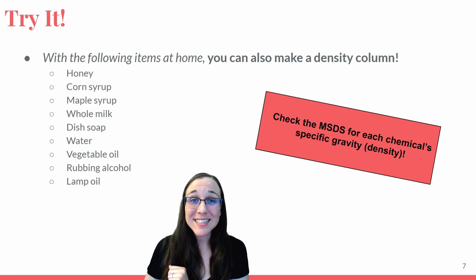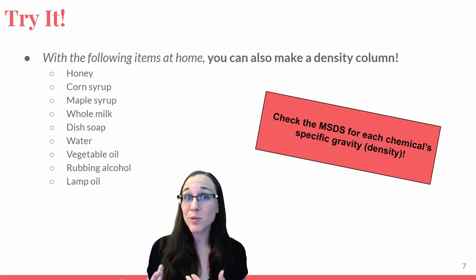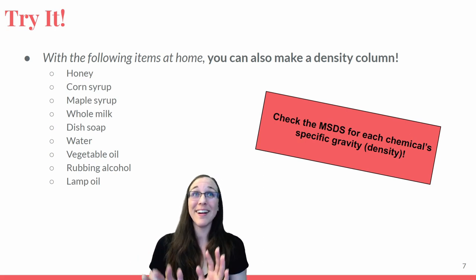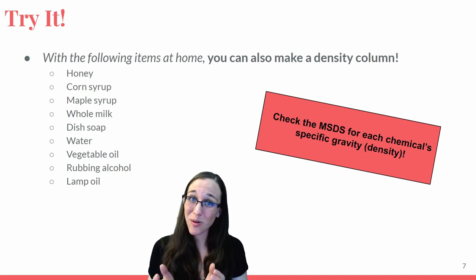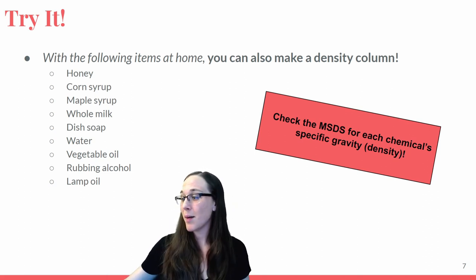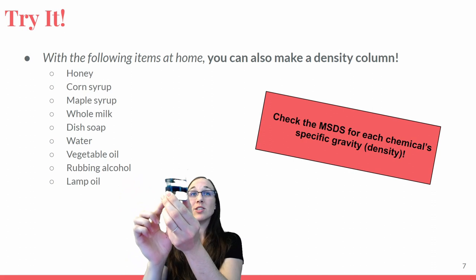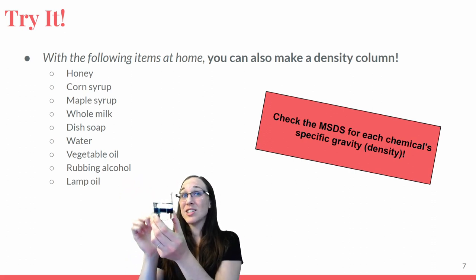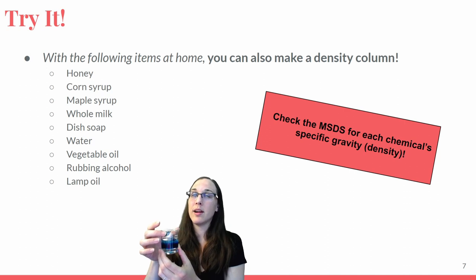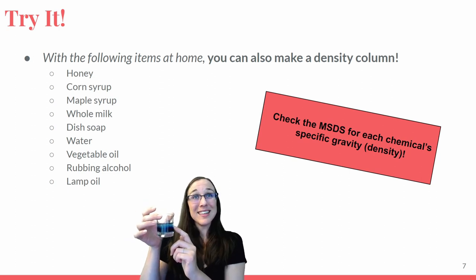Just for fun, if you have honey, whole milk, corn syrup, water, vegetable oil, isopropyl alcohol, and maybe lamp oil from tiki torches at home, it's really fun to check out their densities and stack them on top of each other in a density column. They all have different densities, and if you're careful not to disturb each layer, you can get all of those liquids stacked on top of each other. They look really, really cool — though it takes a lot of patience, especially when densities are very close in value.